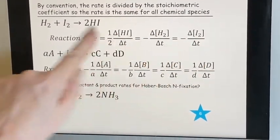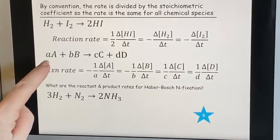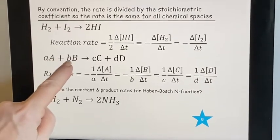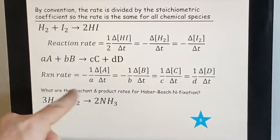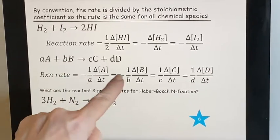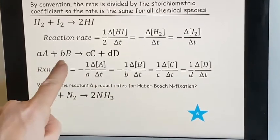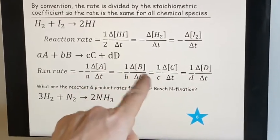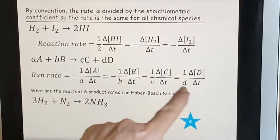So just in general, you would have aA + bB → cC + dD. This reaction rate: these two are reactants so they both have to be negative. The small a and b are going to be the coefficients, so they end up in the denominator. Then you have the change in the amount of A, change in the amount of B. Then these come out and they're positive because they're products, and the c and d end up down here.